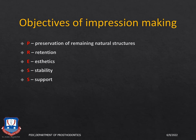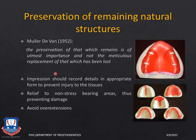The objectives of impression making can be summarized by the acronym PRESS. The first objective is preservation of the remaining natural structures. The second primary objective is to fabricate a prosthesis that has retention, is aesthetic, is stable, and has sufficient support from the denture bearing area.